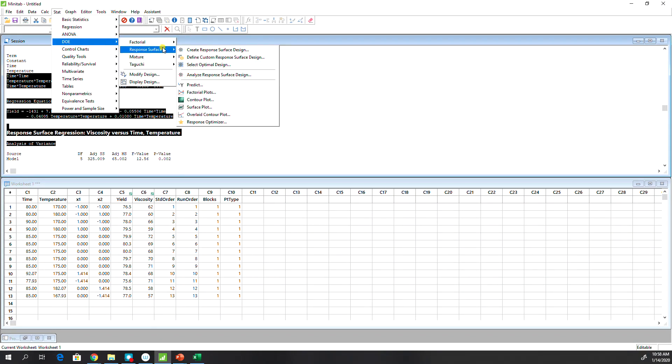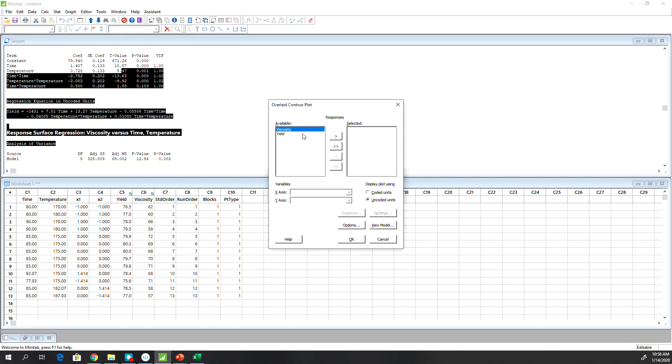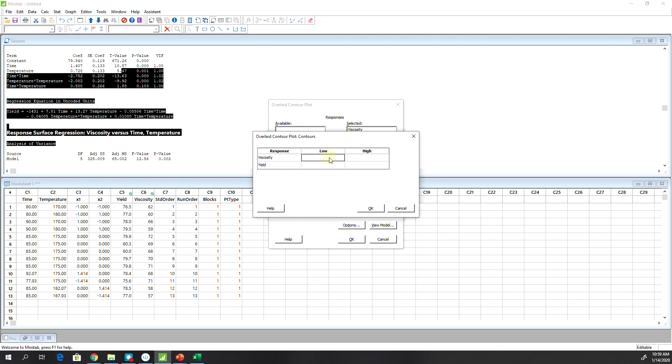Now in this case, we are trying to optimize both together. So I'm not going to create this contour plot or response surface. I'm going to go directly into something called overlaid contour plot. That's where we'll be able to overlay one over the other as it says. And then contours here, we have to define, specify the target value that we're shooting. I know viscosity is 65.